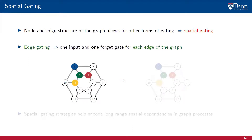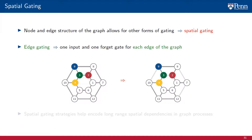The second spatial gating strategy is edge gating. In edge gating, separate input and forget gates are applied to each edge. On the graph on the right, the edge weights between nodes 2 and 3, 7 and 8, 7 and 12, and 9 and 10 can be attenuated to limit node exchanges across these edges. By taking the node and edge structures of the graph into account, spatial gating strategies help encode long-range spatial dependencies in graph processes.